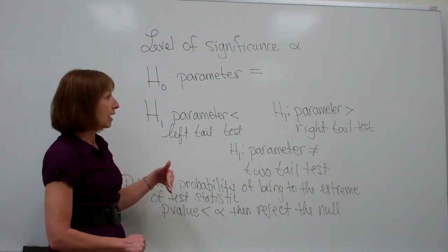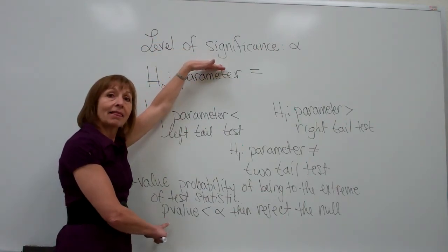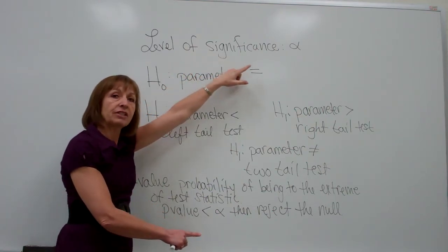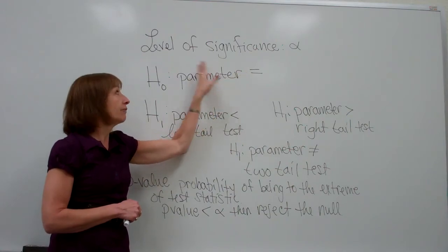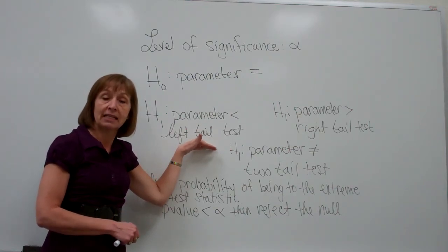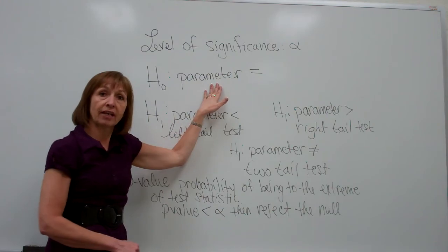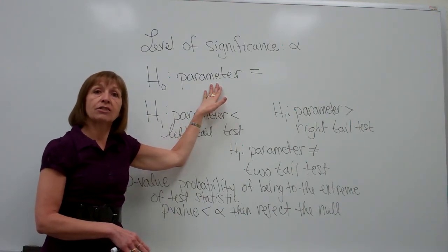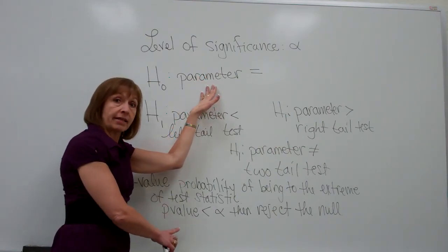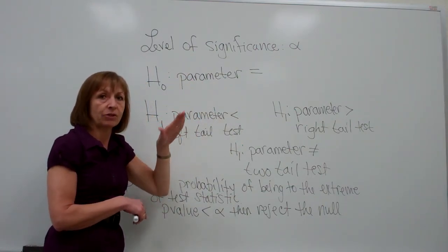The null hypothesis must be treated as the status quo unless you have sufficient evidence from the hypothesis test — meaning the p-value is smaller than alpha — to reject it. If you can reject the null, that allows you to say you have sufficient evidence to support the claim stated in the alternate. If your p-value is not smaller than your alpha, you cannot reject the null, and so you do not have sufficient evidence to support the alternate claim. You're stuck with the null unless that p-value is smaller than alpha.